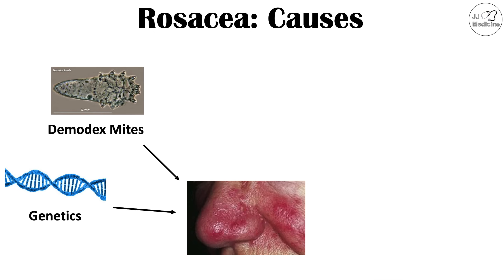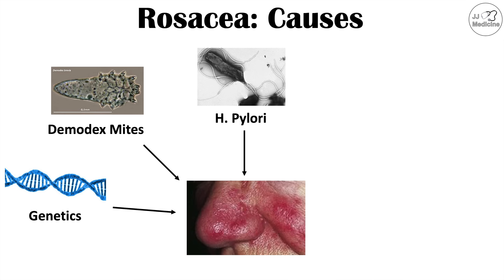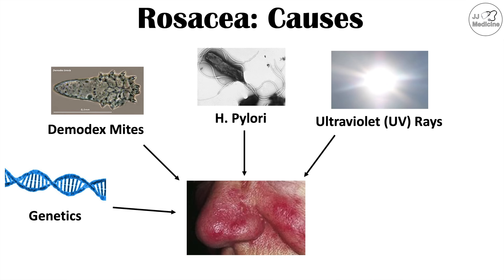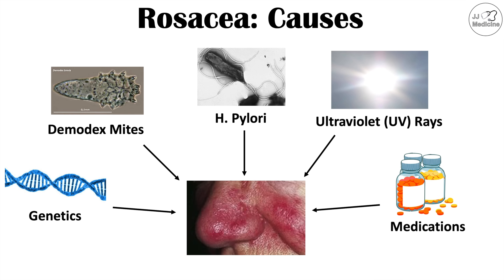Another potential cause is an infection with Helicobacter pylori, or H. pylori — a gram-negative bacteria that can cause a stomach infection. There also seems to be an association between H. pylori infection and the onset of rosacea. Exposure to UV rays may be more of a trigger than a direct cause. Certain medications, including steroids and some blood pressure medications, have also been noted to cause or trigger rosacea.